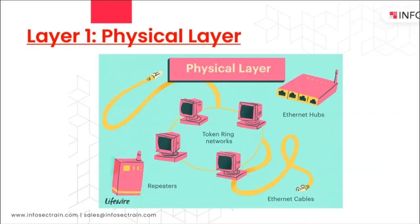The Physical Layer takes care of the hardware side. It sends bits in terms of both wired and wireless. For wireless — like Wi-Fi — bits can be transmitted as wavelengths; for wired connections like Ethernet, twisted pair cable, or fiber optic cabling, transmission can be based on the voltage of the copper wire. That is what we call the Physical Layer.